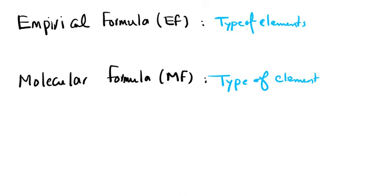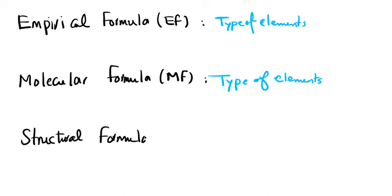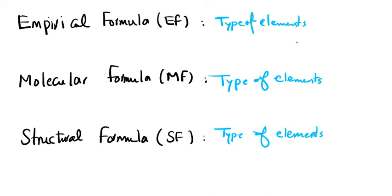When we have any formula, we should know what type of elements are available in it. This also applies to structural formula, abbreviated as SF. So for any type of formula, type of elements is the commonly shared information we may find in each formula.